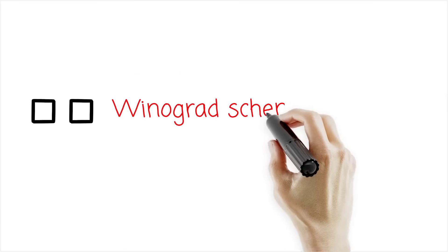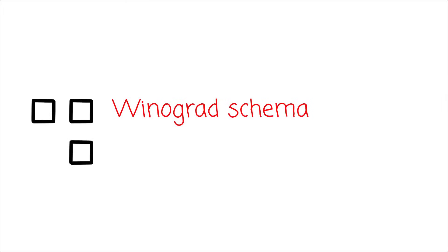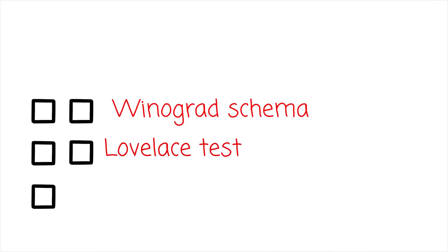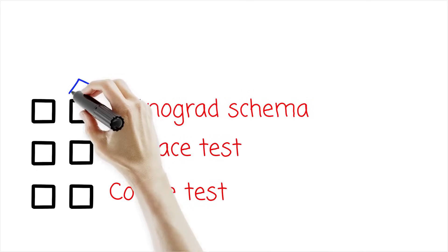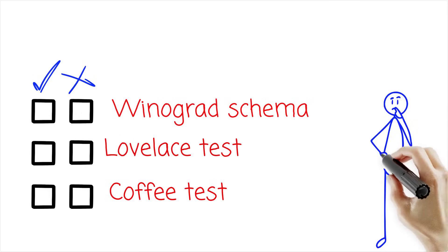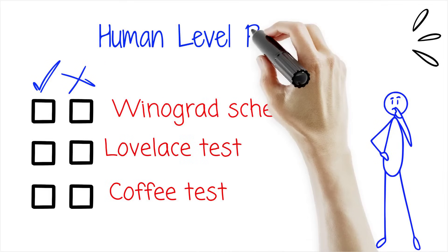Many AI researchers have moved on to bigger and tougher challenges, like the Winograd schema challenge for common sense reasoning, or the Lovelace test of creativity. Some propose the coffee test, thank you Steve Wozniak, which asks an AI robot to roam a random house and figure out how to brew a cup of joe. Now that's human level problem solving. Or is that survival level problem solving?